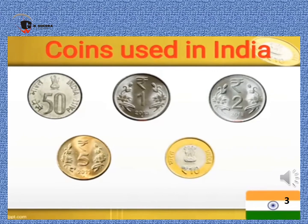Let us see the coins first. Coins are made of metal. The different coins used in India are: 50 paise coin, 1 rupee coin, 2 rupees coin, 5 rupees coin, and 10 rupees coin. And do you know, kids, that 100 paise makes 1 rupee.